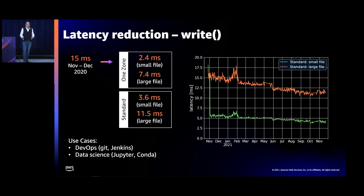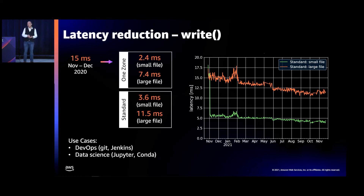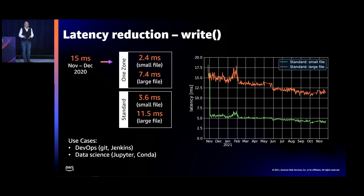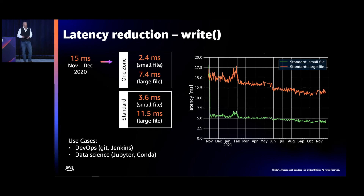The net result is that the 15 milliseconds we had around last November/December is now 2.4 milliseconds for small files on OneZone, 7.4 for large files on OneZone, 3.6 for small files on standard, and up to 11.5 for large files on standard. What use cases benefit from this? The usual suspects — any use case that creates lots of small files: Git and Jenkins for DevOps, and in data science things like Jupyter notebooks. Conda is another notable example where you create Python environments. Those use cases benefit a lot from these optimizations.